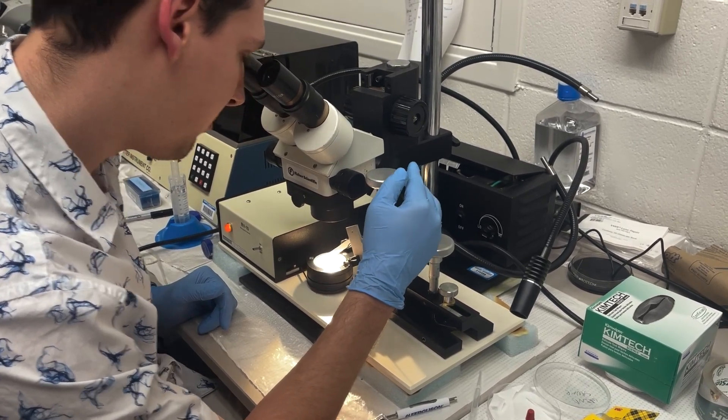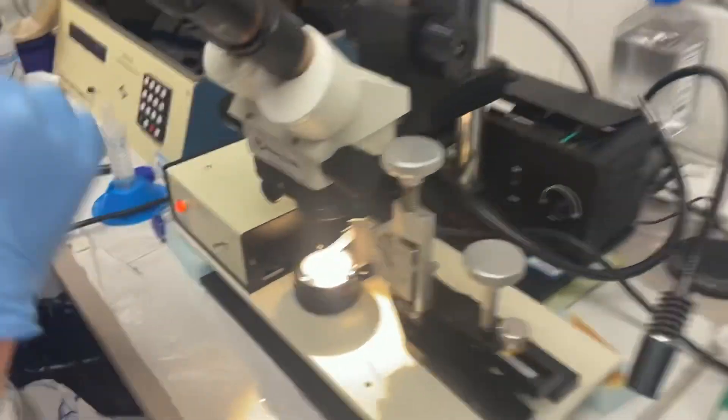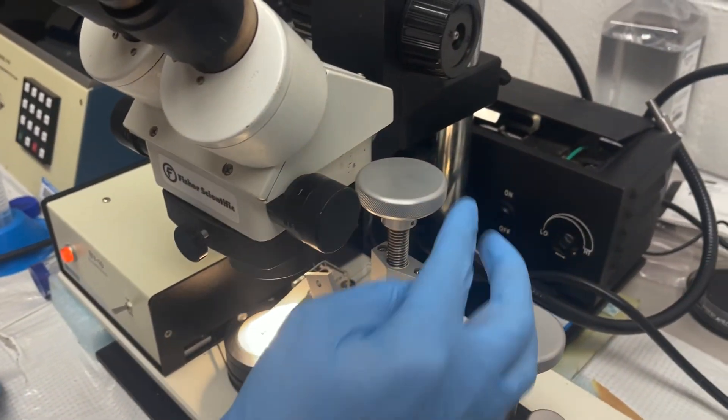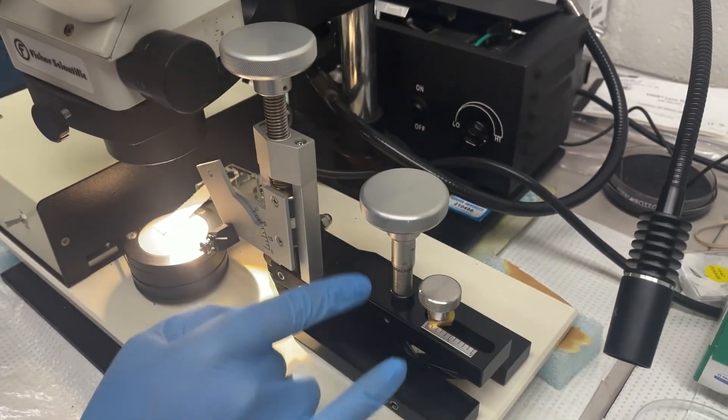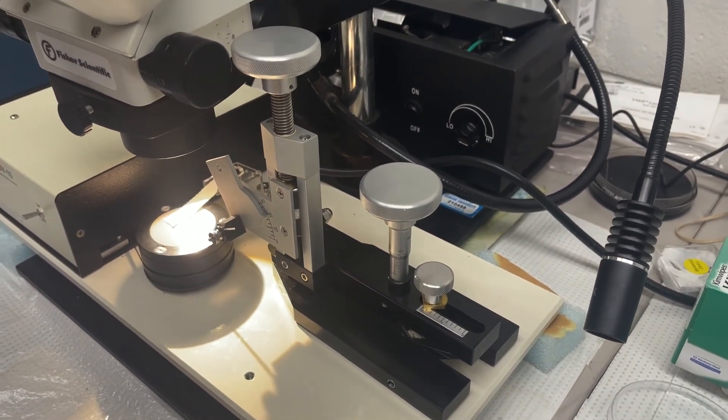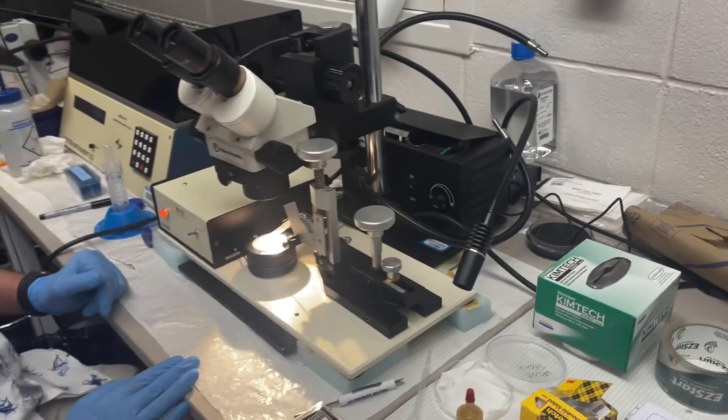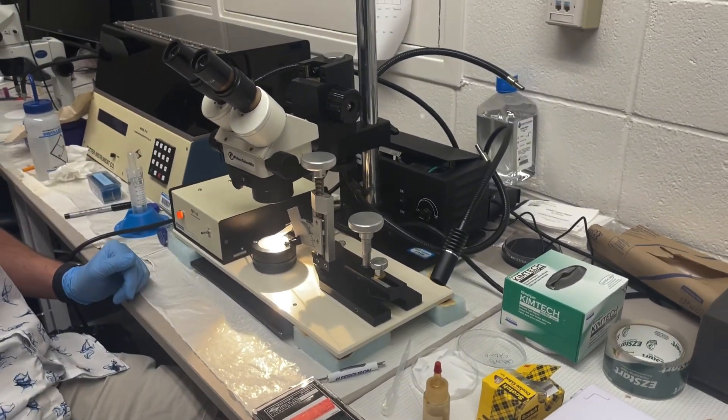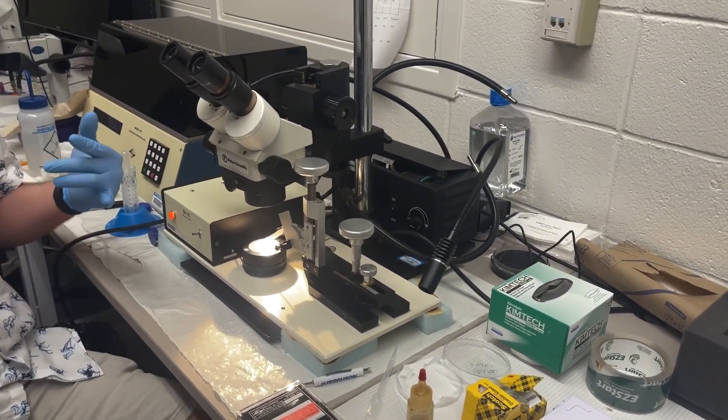This little knob thing is for raising it up. These knobs will level it, so you want it completely level. You level it in, and that's how you bevel needles.